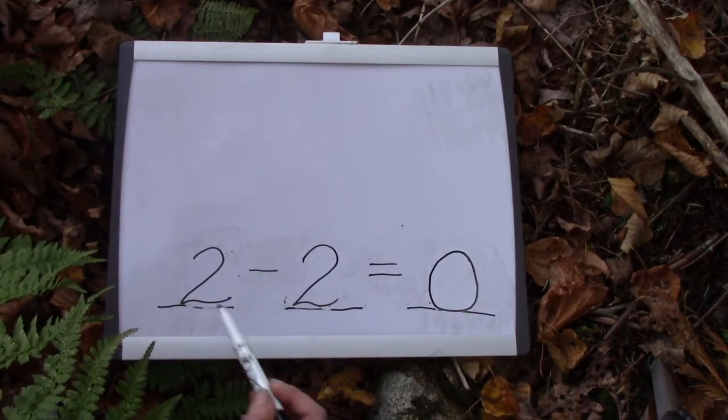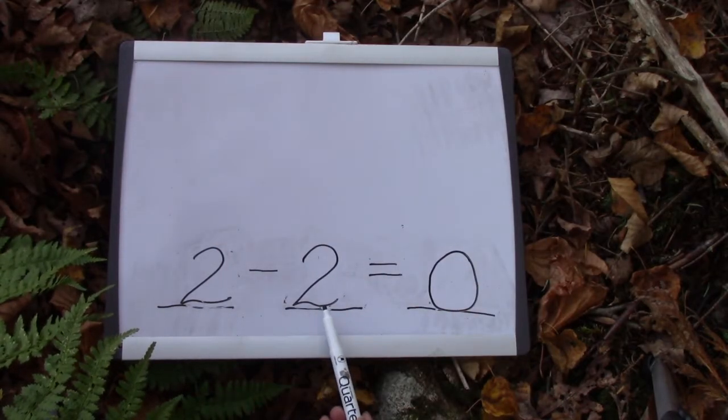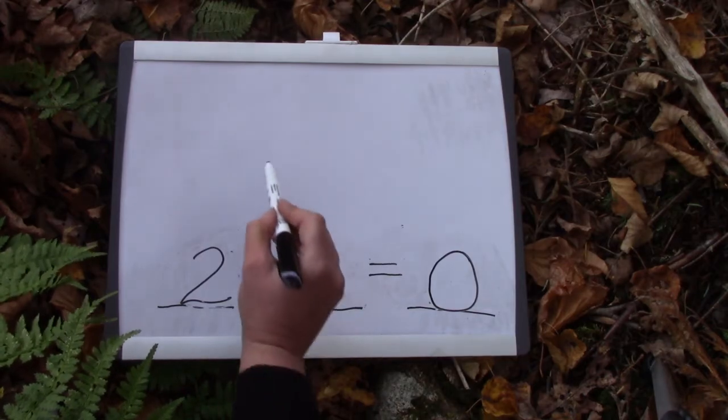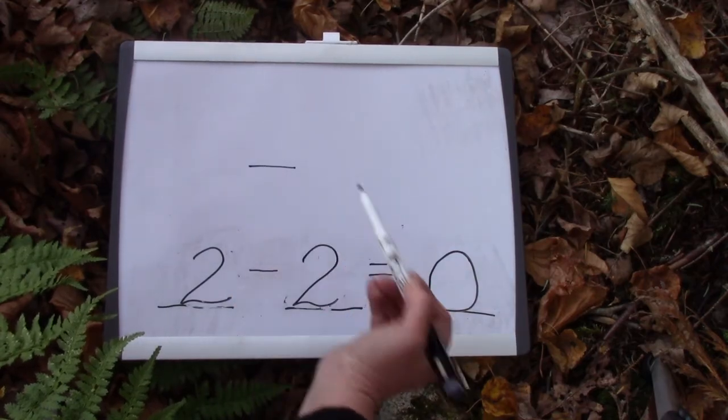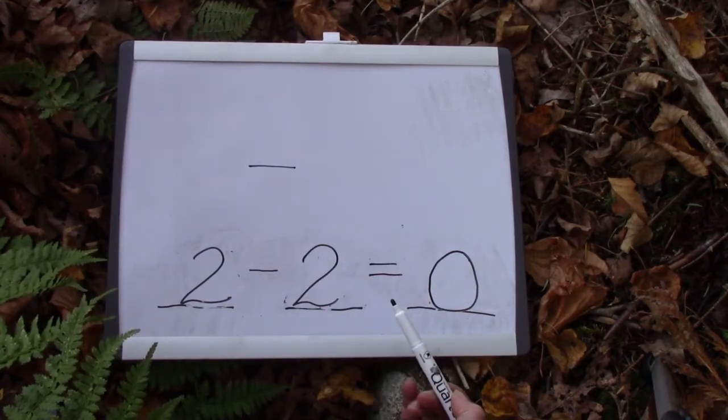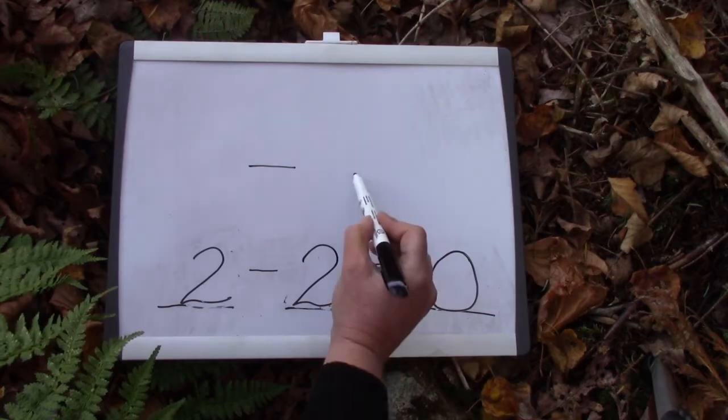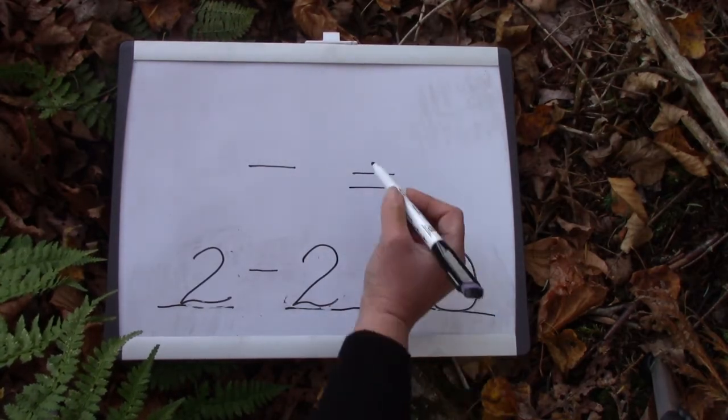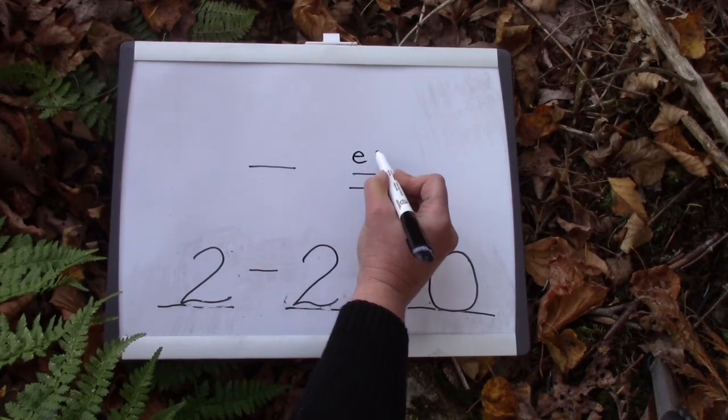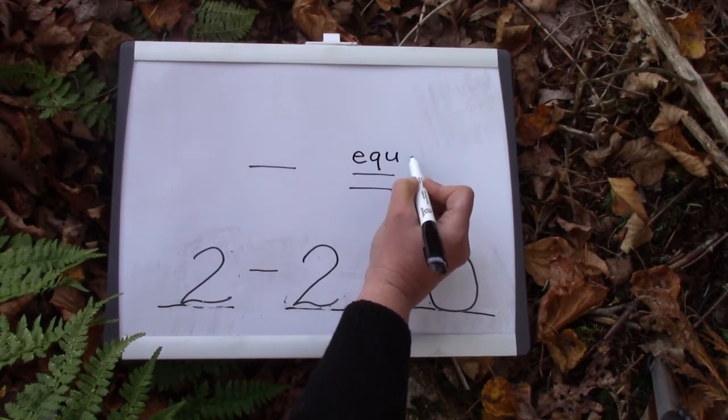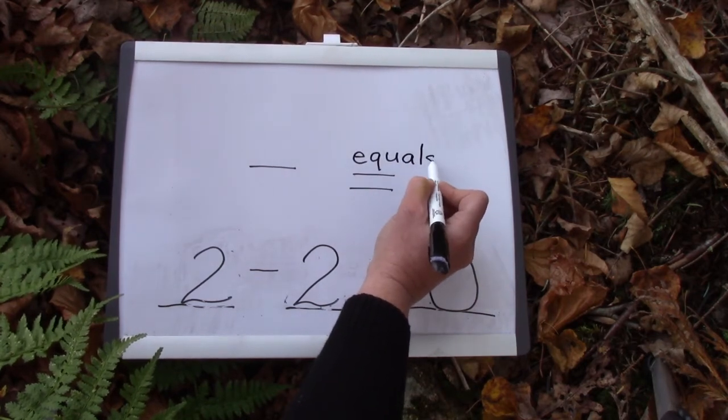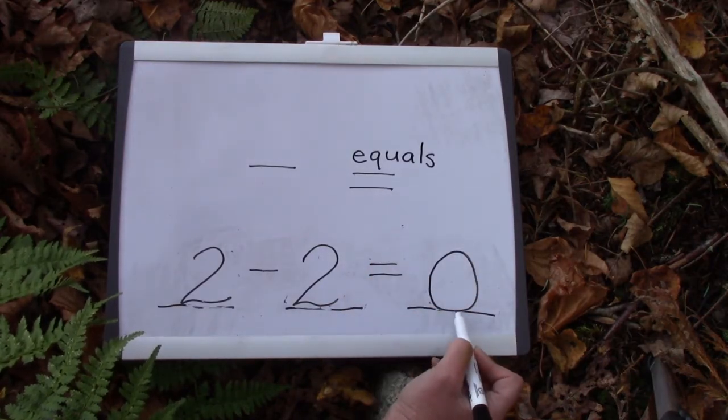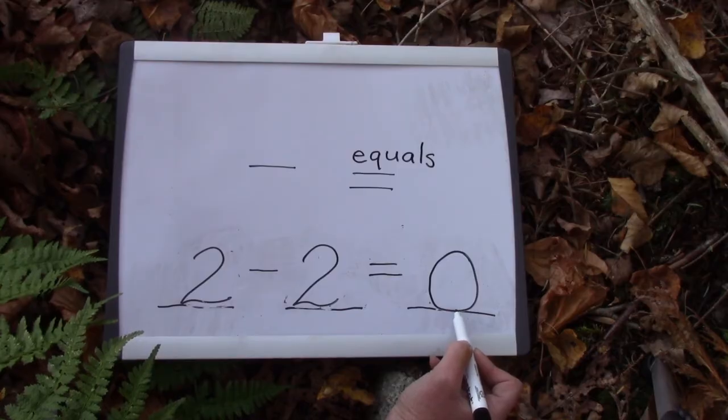When we practice some and some went away questions, we use a minus sign. It looks just like a straight line. And the double line is the equals line. Equals tells us how many we have in total.